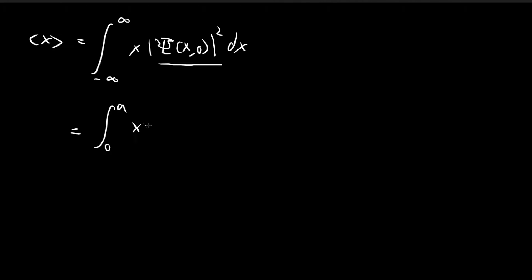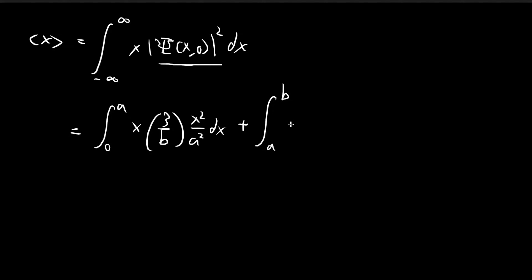In the end, we get x times 3 over b, times x squared divided by a squared, dx for the first integral. Then from a to b, the wave function equals this expression, so we get x times 3 over b, times (b minus x) squared divided by (b minus a) squared, dx. From b to infinity the wave function is 0, so we can ignore that part.